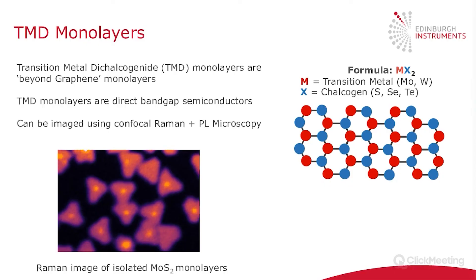Moving away from graphene, another important 2D material is transition metal dichalcogenide monolayers, or TMD monolayers. These are a very hot topic as they're considered next generation graphene. The structure consists of a transition metal — typically molybdenum or tungsten — with a chalcogen such as sulfur, selenium, or tellurium, giving this MX₂ structure. It's basically an inorganic analogue of graphene.